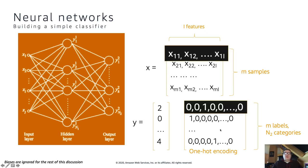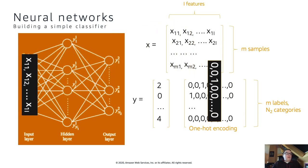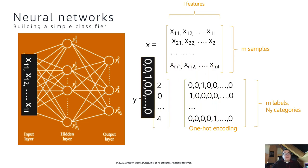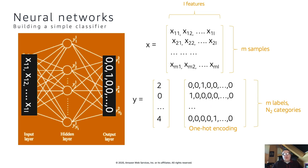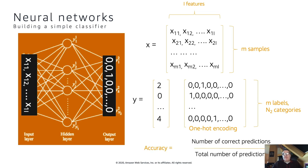Ideally, when you put the features for a sample on the input layer, run multiply and accumulate, and run activation functions, you will have zeros in all output neurons except for the neuron corresponding to the right category. That's the ideal scenario. We measure performance using accuracy — the total number of correct predictions divided by the total number of predictions. Ideally we have 100% accuracy, but it takes some work to get there.